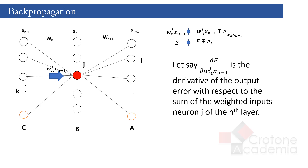In backpropagation, we are trying to solve the system layer by layer. Let's assume we know the derivatives of error E in the next layer, that is layer n+1. To find the derivatives with respect to the inputs to node j in layer n, we somehow have to associate this derivative to the derivatives of the next layer n+1. As the contribution to the error from node j has to propagate to the output through its connections to the next layer n+1, the error should be a function of values we get in the next layer. This means we can use the chain rule in differentiation to express the derivatives as the sum of derivatives in the next layer.